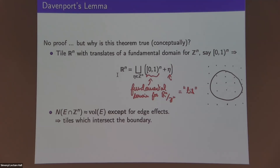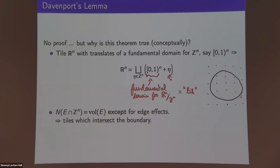How would you naturally try to prove something like this? You would do what you were taught in grade school when estimating volumes — you count little tiles, one by one little squares. That gives you an approximation to the volume contained in the region. If you identify the lower left-hand corner of those little squares with lattice points, this would be a count. You tile Rⁿ with translates of a fundamental domain for Zⁿ. In R², you get a lattice, and you identify each lattice point with the lower left-hand corner of a fundamental domain.